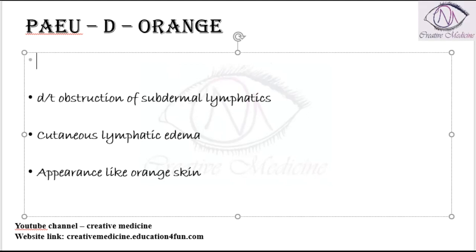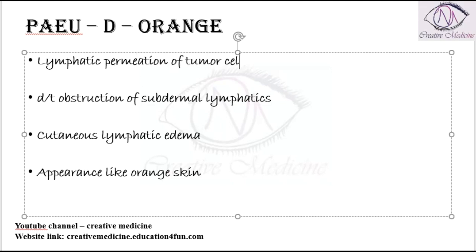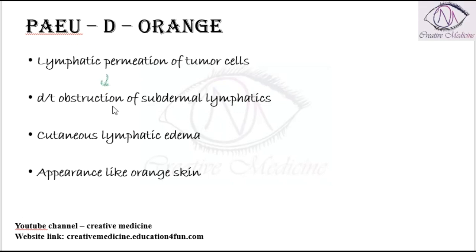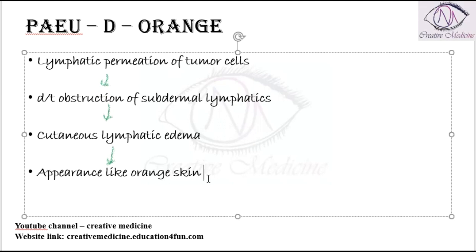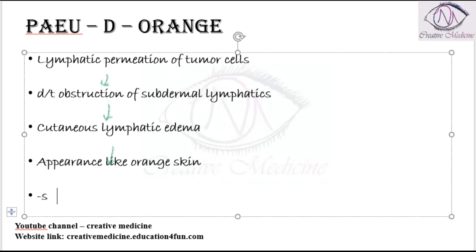This obstruction of subdermal lymphatics is mainly due to the lymphatic permeation of tumor cells. Lymphatic permeation of tumor cells leads to obstruction of subdermal lymphatics, causing cutaneous lymphatic edema and the appearance of orange-colored skin. Overall, this is mainly seen in advanced breast carcinoma.